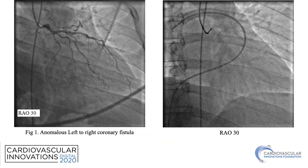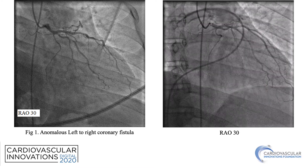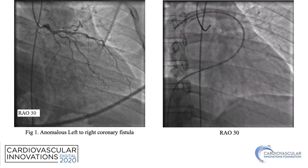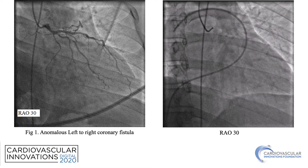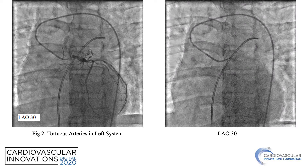This is the coronary angiogram in which you can see that there are some vessels arising from the proximal left system going superiorly and anteriorly. This is another projection showing a network of vessels arising from the proximal left system. You can see the pulmonary catheter positioned in the main pulmonary artery as reference.